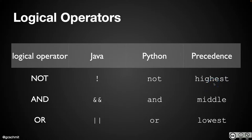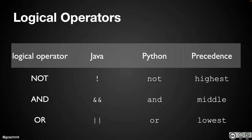For example, if we have multiple logical operators in the same expression, we evaluate the NOT operator first, then the AND, and finally the OR. The NOT operator is the exclamation point — we saw that yesterday. The AND operator is two ampersand characters (that's Shift+7). And the OR operator is two vertical pipes, which is Shift and the key above your Enter key.